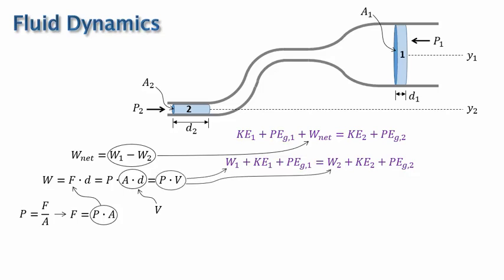And we can make that substitution in the conservation of energy equation. At the same time, I'll replace each kinetic energy term with one-half mv squared and each potential energy term with mgy. After making all of those substitutions, the conservation of energy equation now becomes this, where I have given pressure, velocity, and height y a subscript corresponding to the location of the fluid segment.